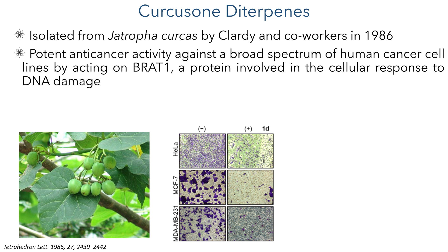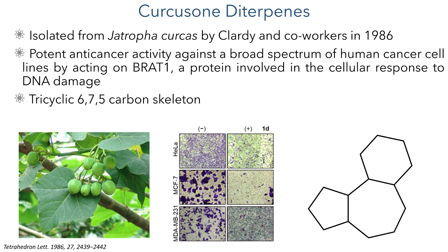This paper also goes into detail about how this was elucidated, and I'll cover this in a separate video in future. Structurally, the common feature of the Quercusone diterpenes is the tricyclic 6-7-5 carbon framework which is present in all of the molecules studied in this work.